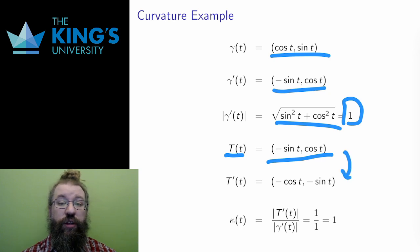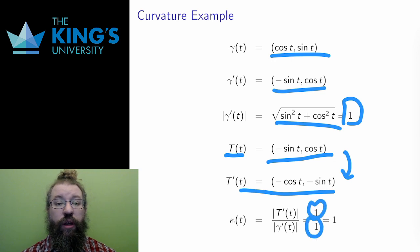Then I differentiate the unit tangent and take its length, and I divide the two lengths following the formula on the sidebar, and I find that the unit circle does, in fact, have curvature one.